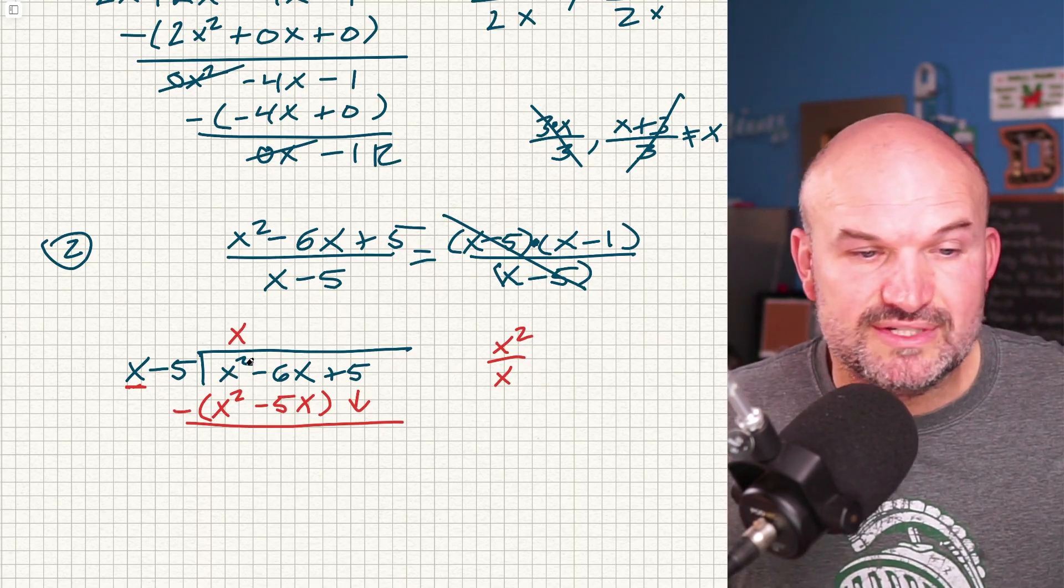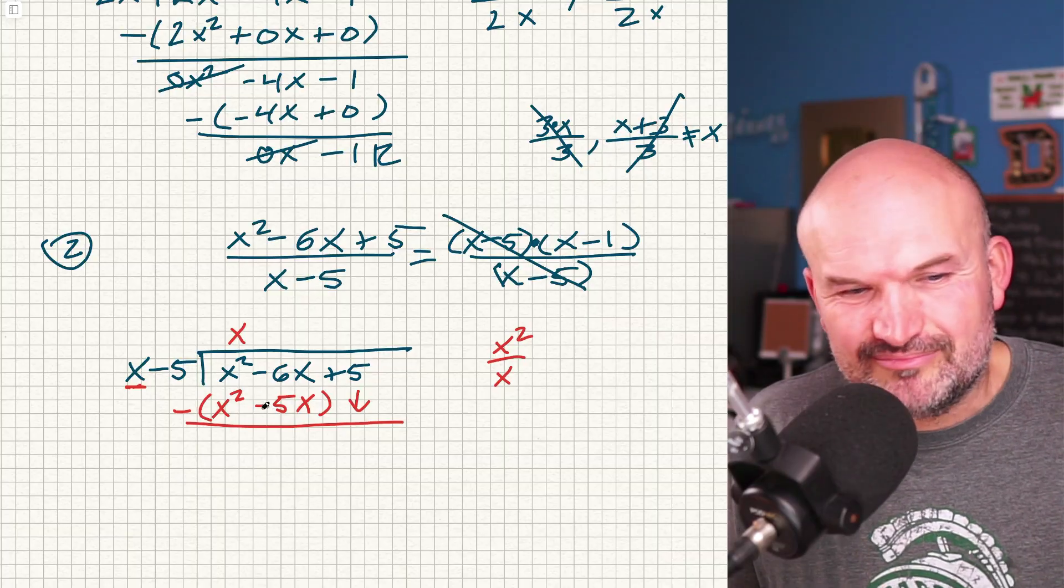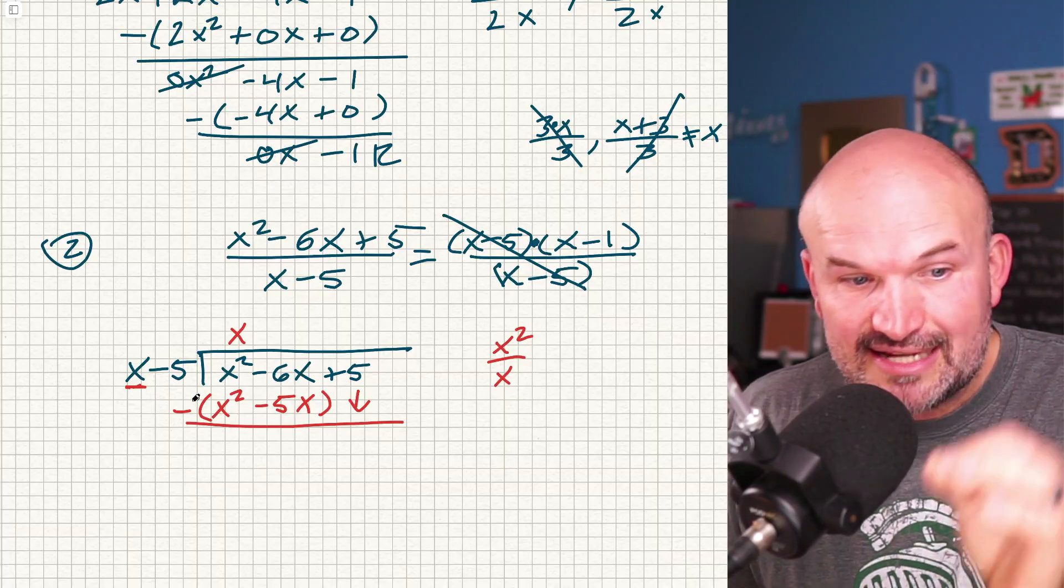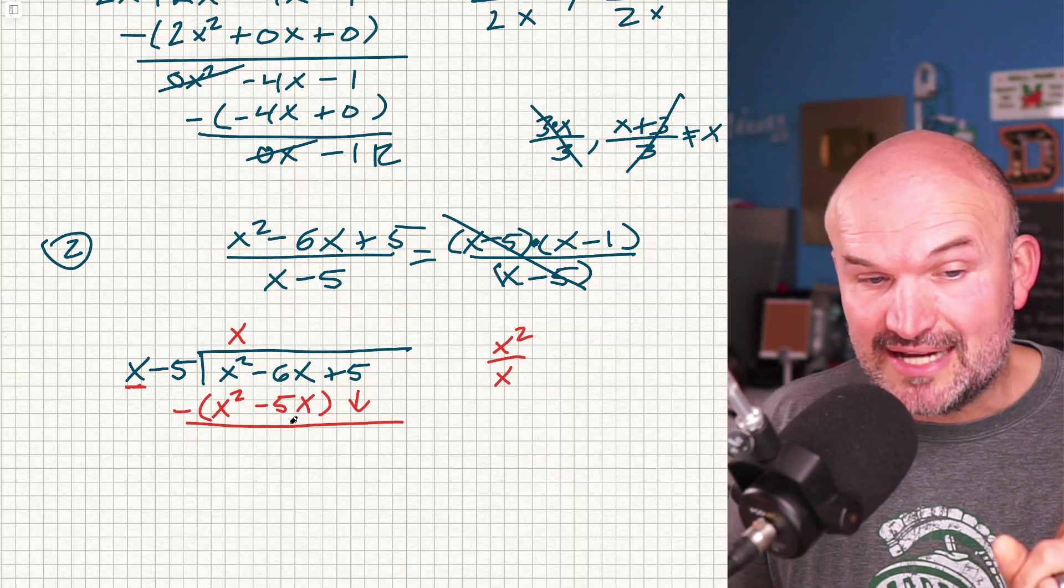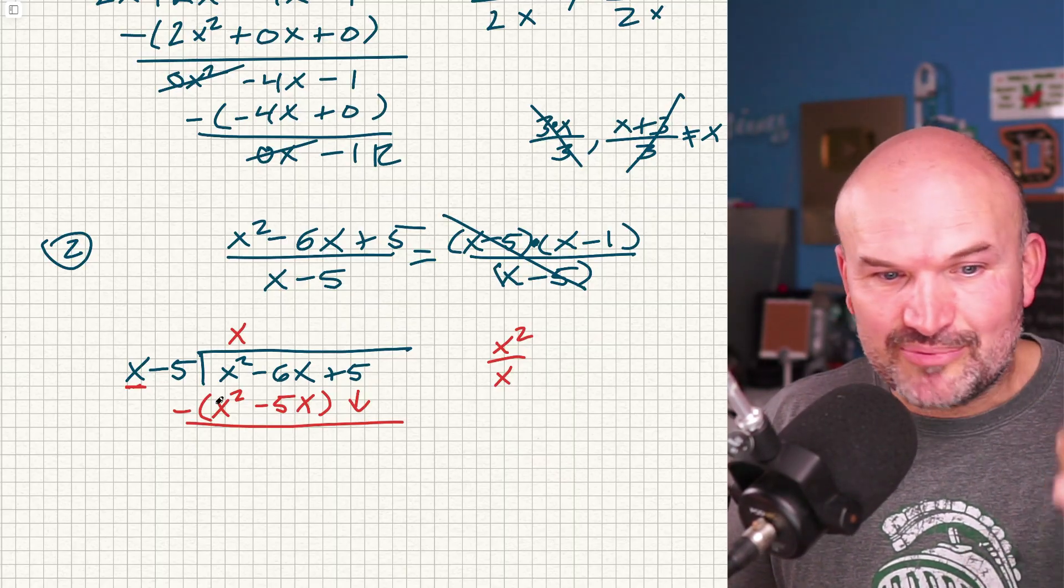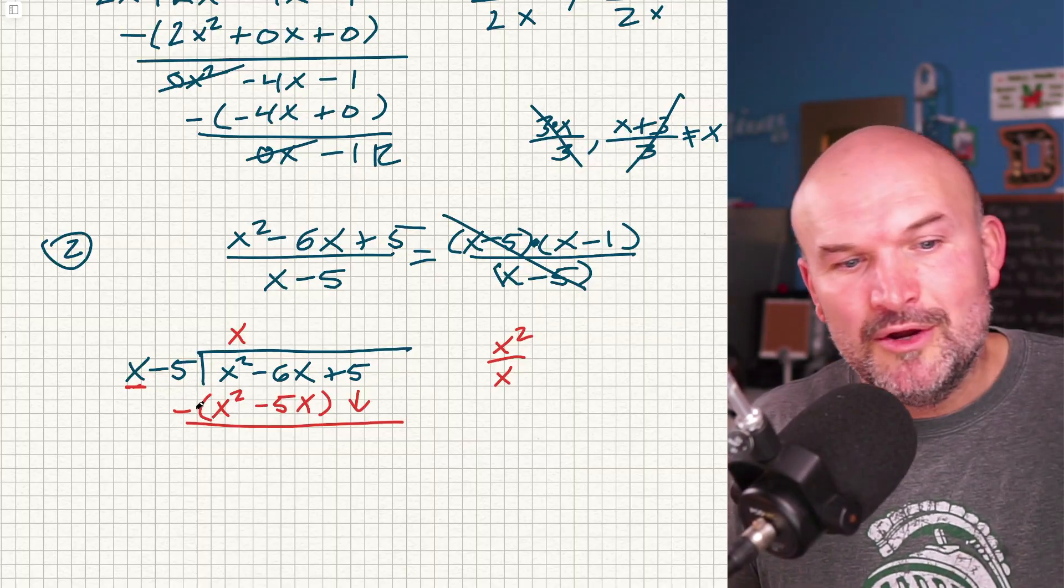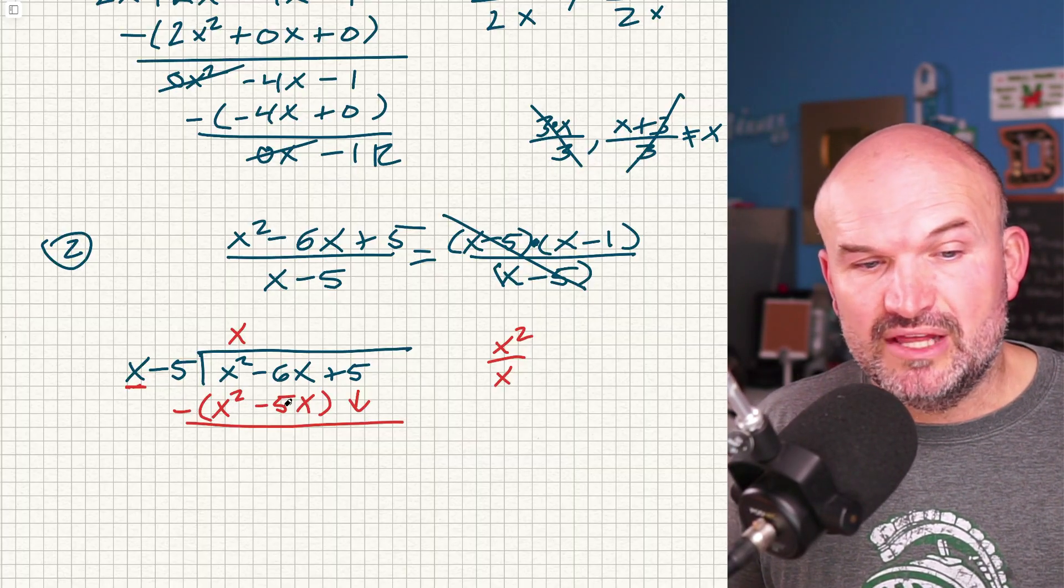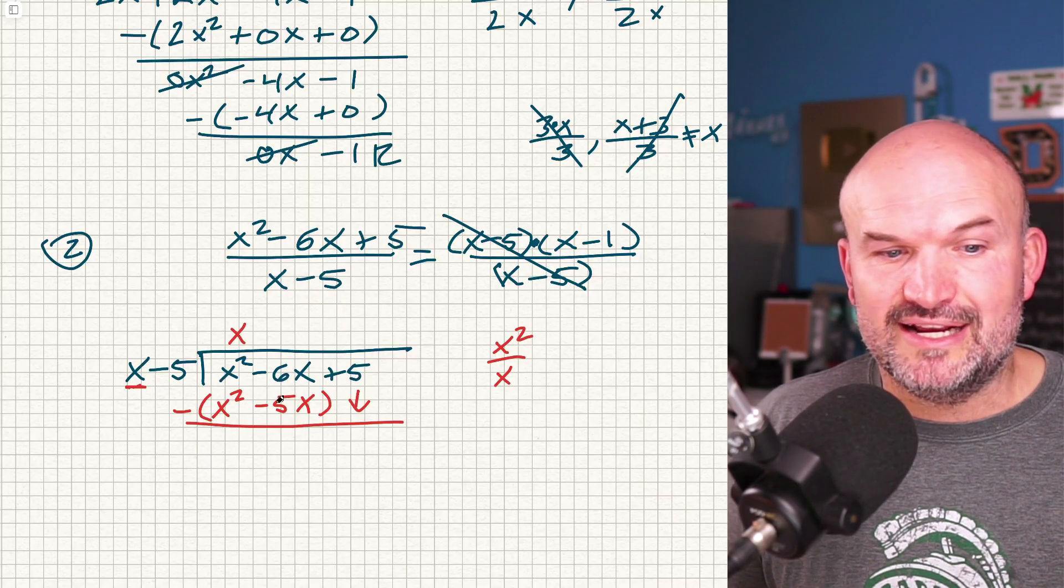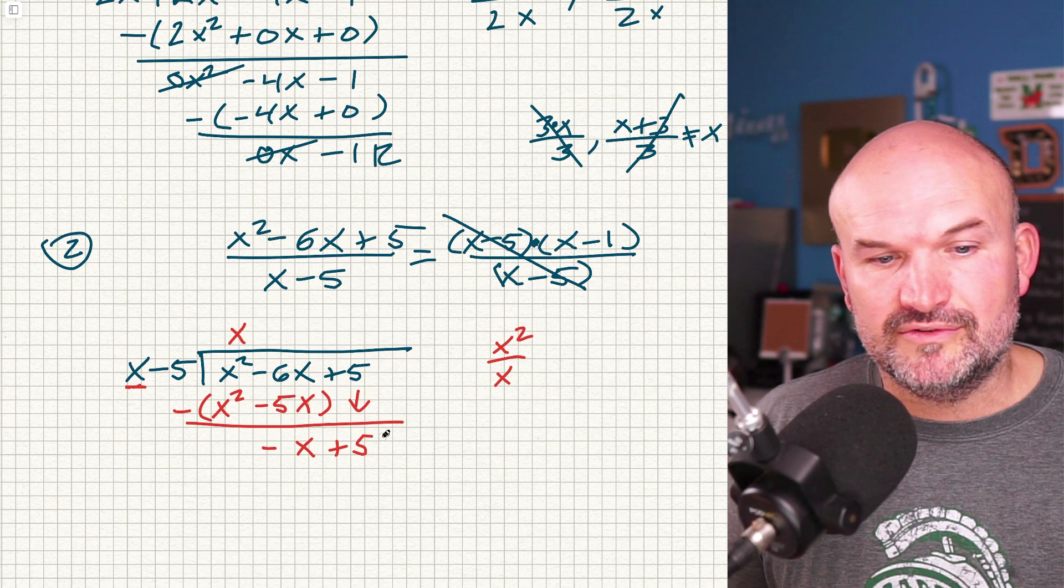So we're going to subtract our rows. x squared minus x squared is zero x squared, but we don't need to write it, right? Just leave it off. Negative 6x minus a negative 5, again, that's a double negative. So that's why it's positive. If you don't put this negative here in parentheses, you're going to get this wrong. And that's the most common mistake students make. So spend the extra time, write the parentheses and make sure you're subtracting your rows, right? It's not negative 11x. It's negative 6 minus a negative 5. That's positive. So that's a negative x. And then we have our plus 5 over here.